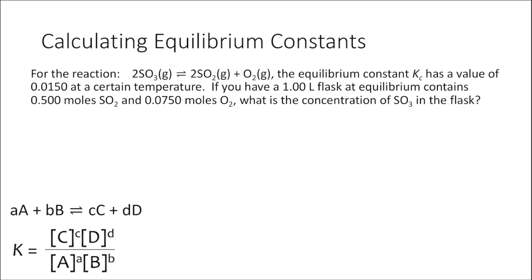Let's try one more example. What if we're given equilibrium concentrations for some species in our reaction and we're also given the equilibrium constant — can we solve for the unknown? Yes! We start by writing our equilibrium constant expression: Kc equals the concentration of SO2 squared times the concentration of O2, divided by the concentration of SO3 squared, using the coefficients from the balanced chemical equation.